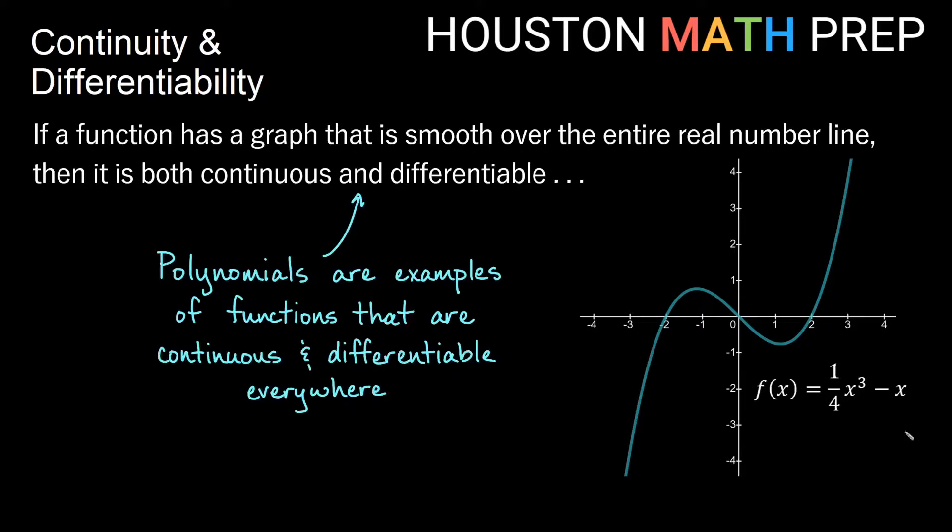Polynomials are great examples of this. Here you'll notice I have f(x) equals one-fourth x cubed minus x. When we have whole number positive powers of x, those are polynomials. Polynomials are good examples of functions that are continuous everywhere, and they're differentiable everywhere because their graphs are smooth and usually pretty curvy.